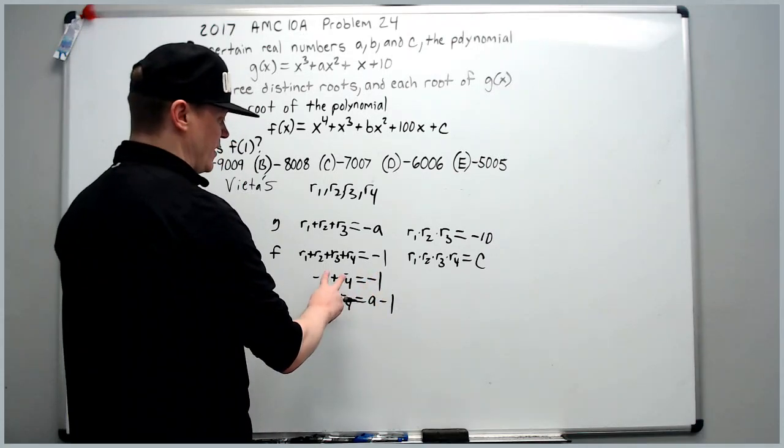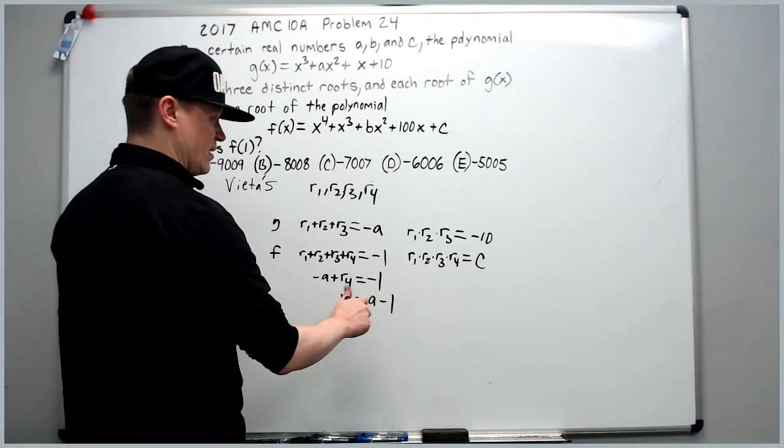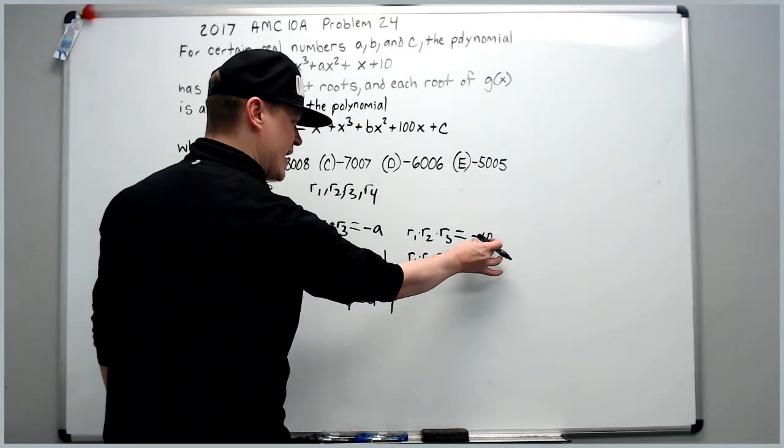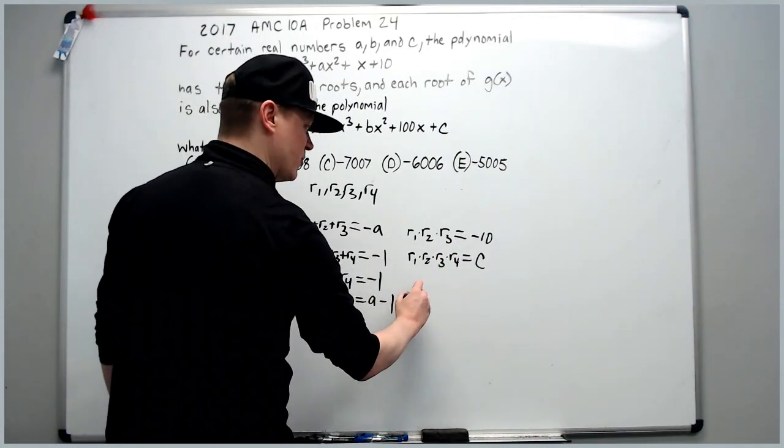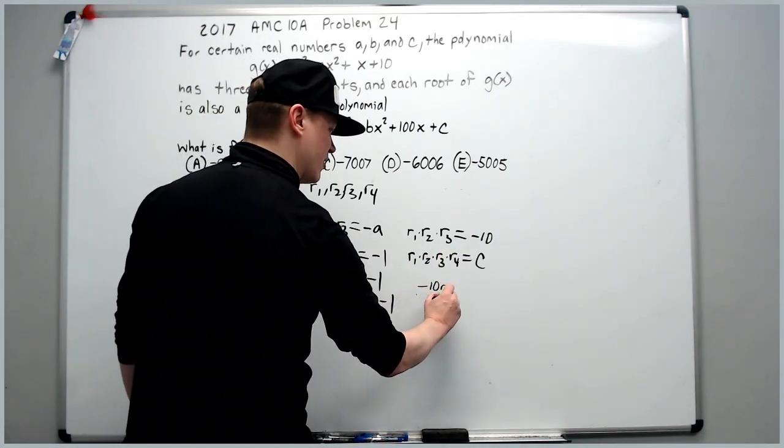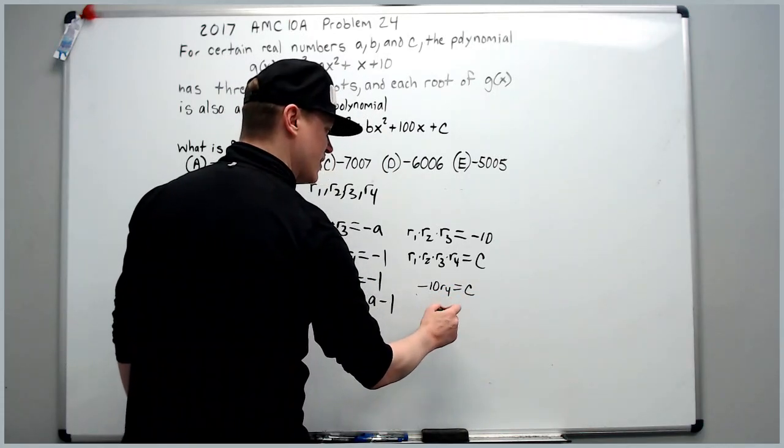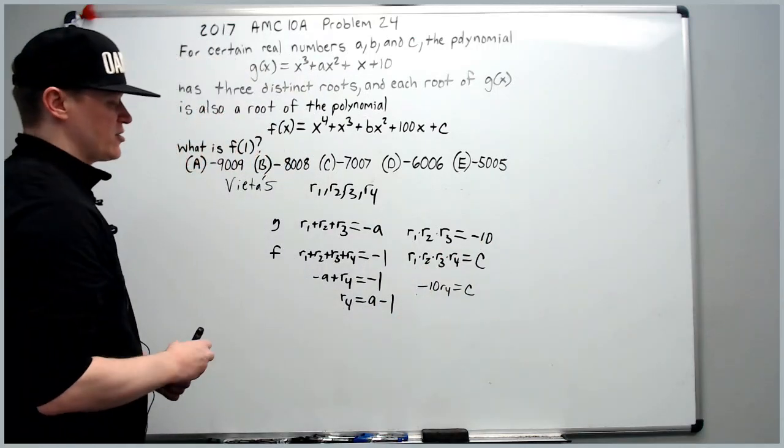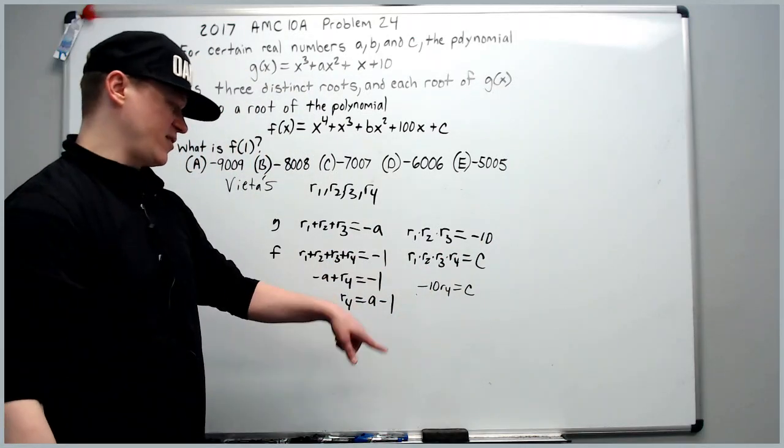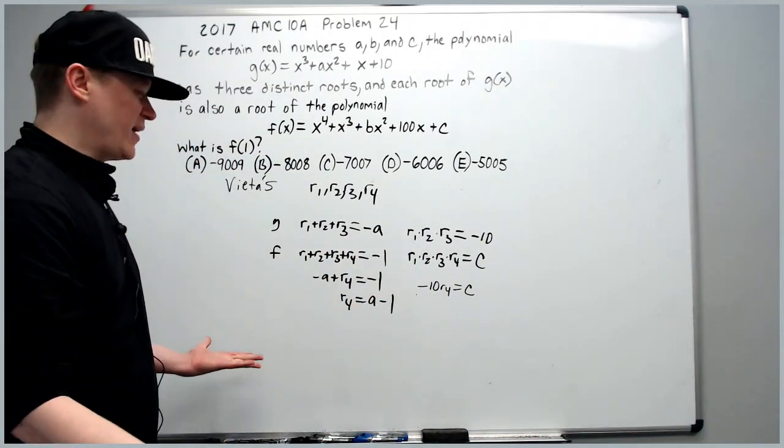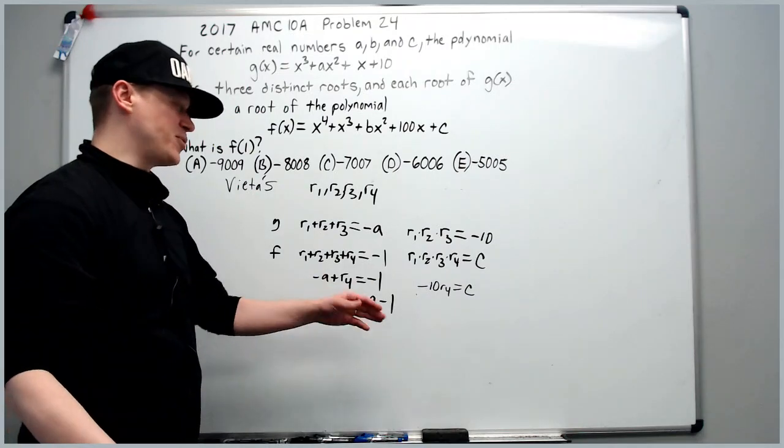Okay, so then what? We can say that negative 10 gets plugged in here. We will get negative 10 r4 is equal to c and then that's all you can do with that. So when we look at these two new pieces of information that we produced, you might feel like it was a waste of time. Perhaps it was.